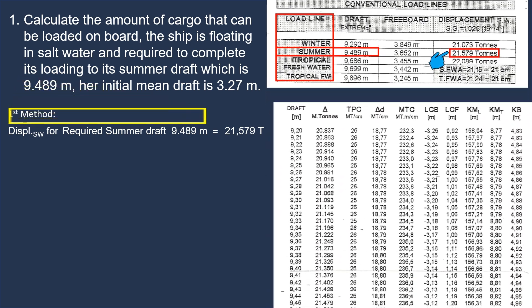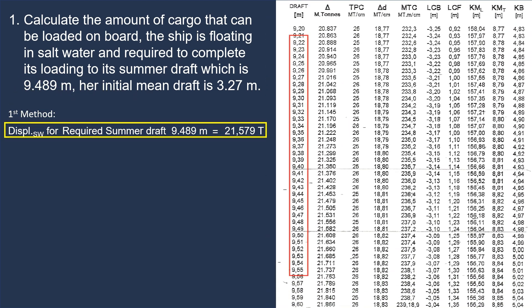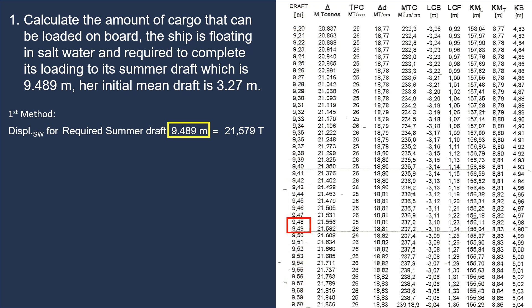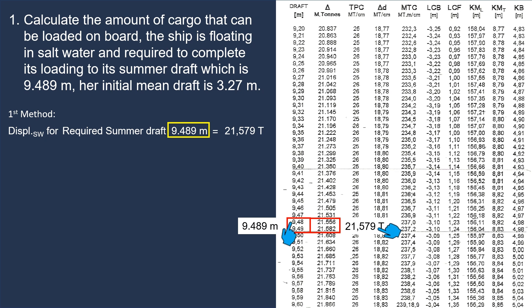We can also find this value in the ship's hydrostatic table. In the first column, we will find her summer draft of 9.489 m. In this table, the stated drafts are 9.480 and 9.490 m. In the second column we can see the corresponding ship's displacement. At a draft of 9.490, her displacement is 21,582 tons. The ship's summer draft is 9.489 with her corresponding summer displacement of 21,579 tons. There is a difference of only 3 tons — we can skip the interpolation process to keep this shorter.